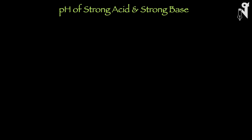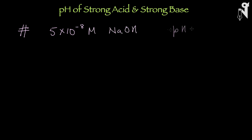Just do one question for this part: find the pH for 5 × 10⁻⁸ molar NaOH. What's the pH? Should it be less than 7 or more than 7? What is the exact value to 4 significant digits? That ends this part, and now we are going to start with another kind of solution — a solution of a weak acid or a solution of a weak base.